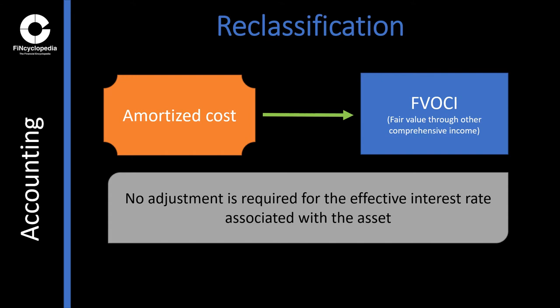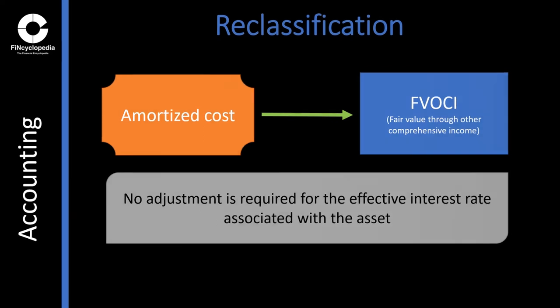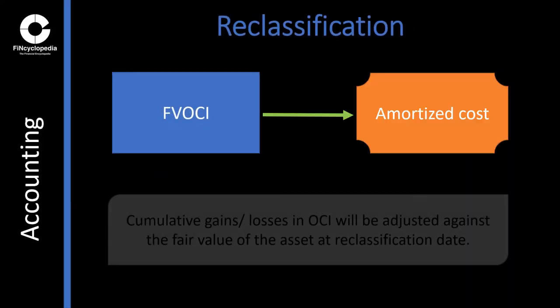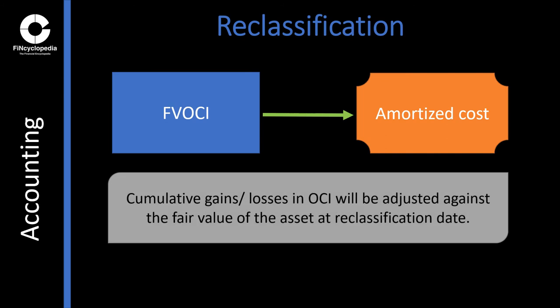For example, reclassification from amortized cost to FV OCI does not result in an adjustment to the effective interest rate associated with the financial asset. While in the opposite scenario — reclassification from FV OCI to amortized cost — cumulative gains or losses in other comprehensive income will be adjusted against the fair value of the asset at the reclassification date.